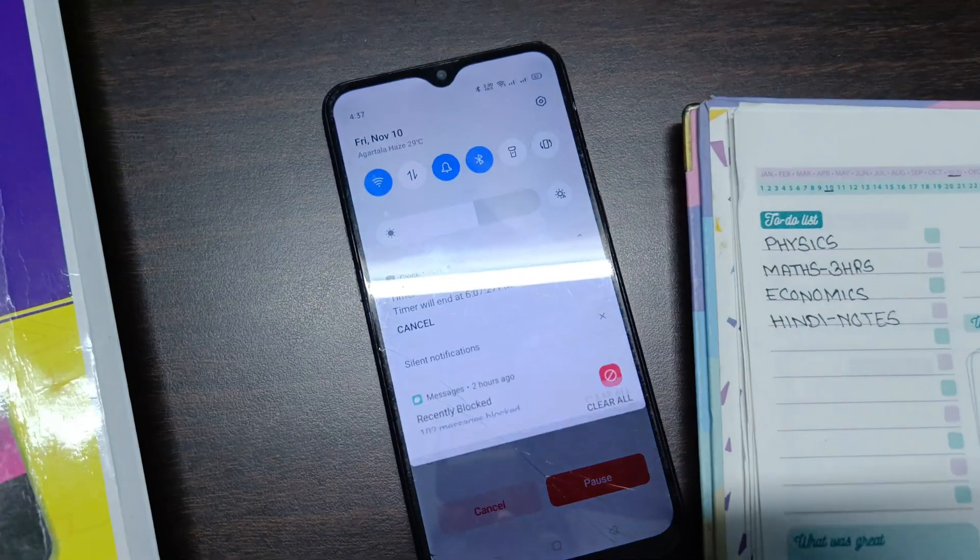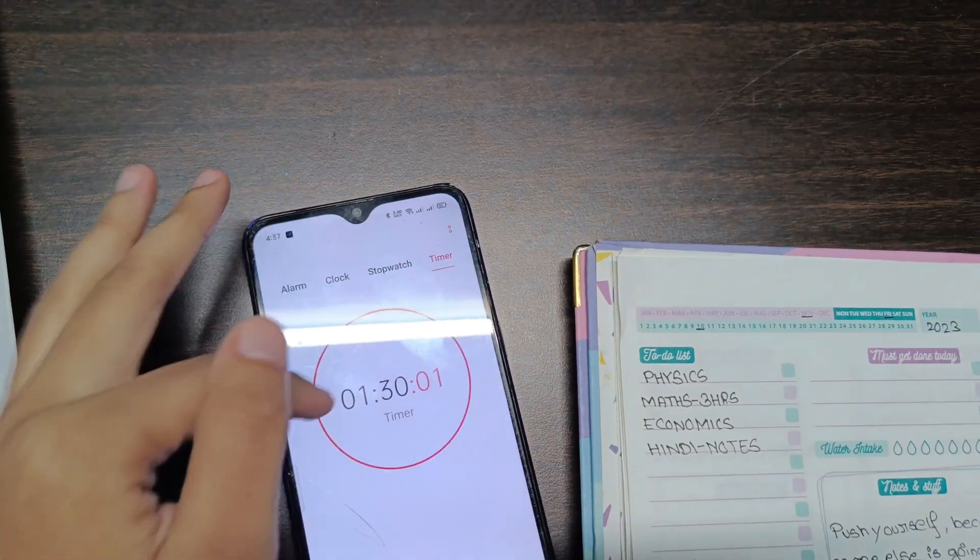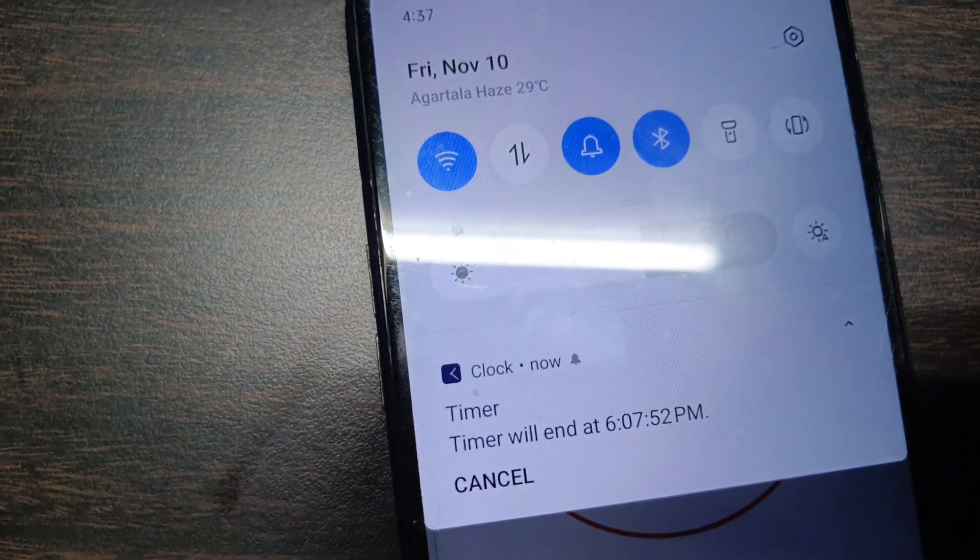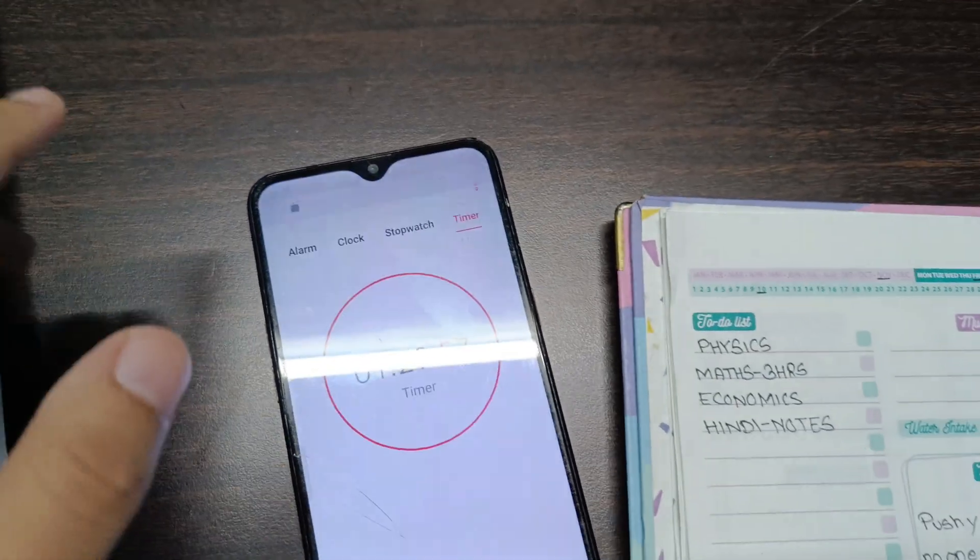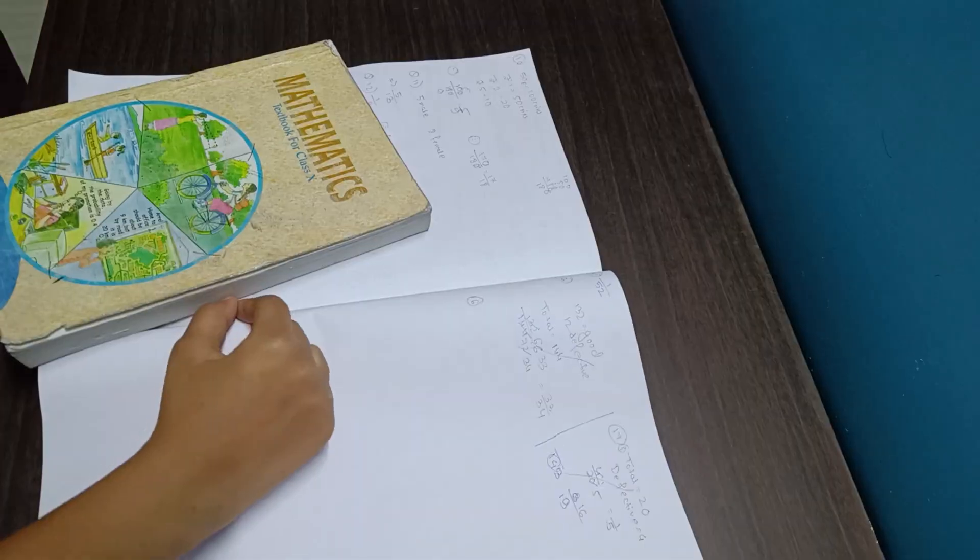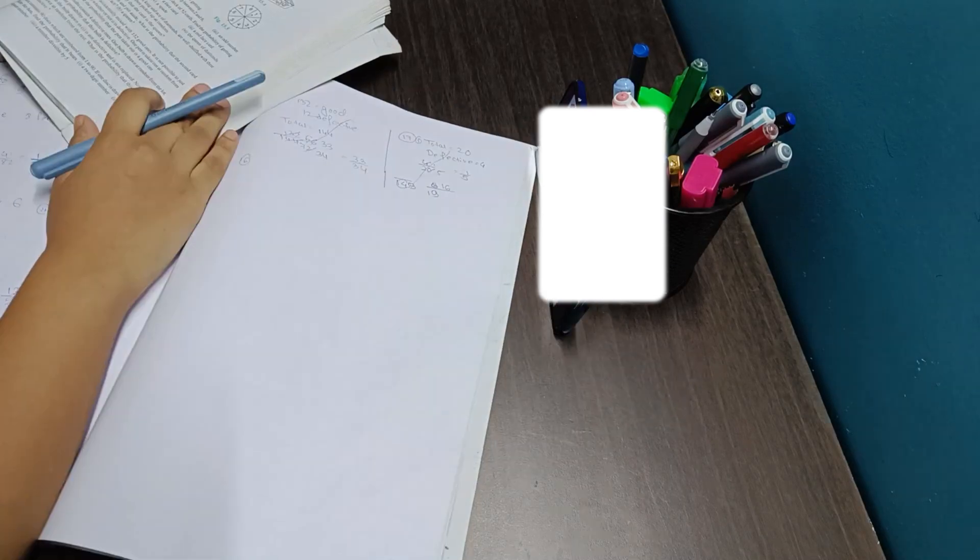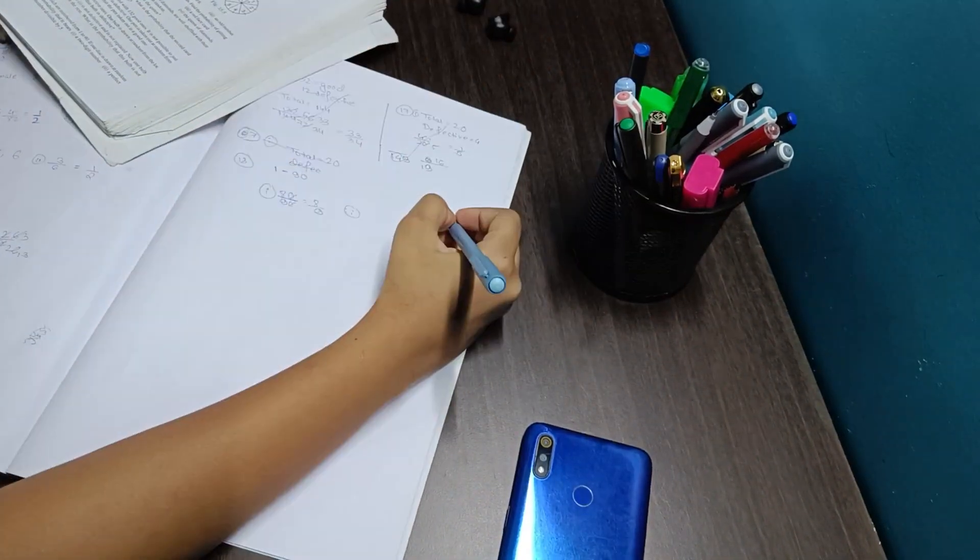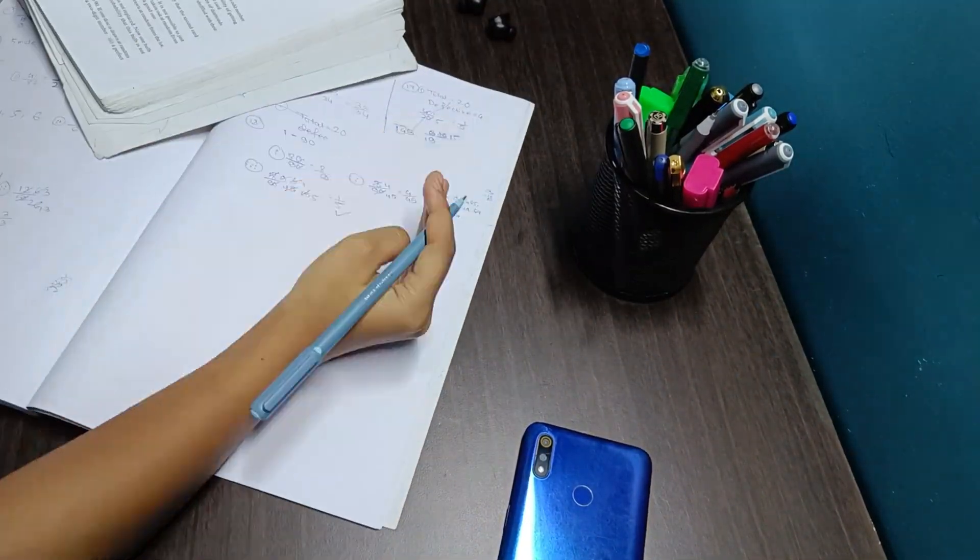So this timer will end at 6:07. Let's start studying. Here I was doing mathematics - the chapter was Probability, and it was a very small and simple chapter.